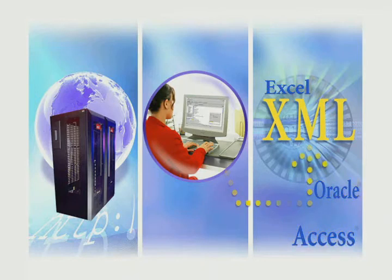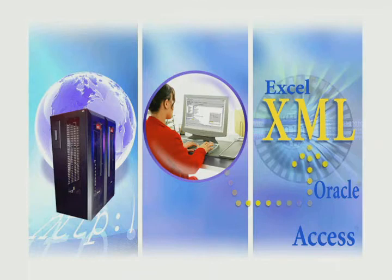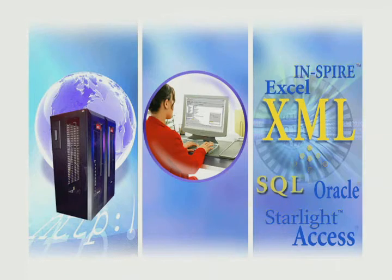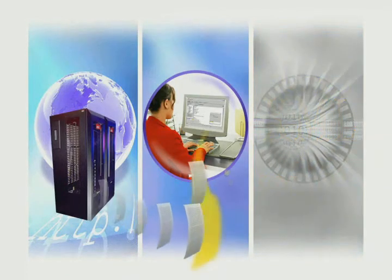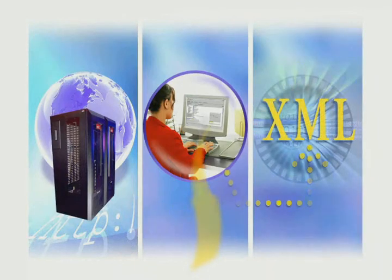UPA also provides an ideal front-end information extraction and transformation tool for analysis software. This includes Pacific Northwest National Laboratory's award-winning information visualization tools, Inspire and Starlight. For multiple users, UPA can be installed on a network server and be available to all designated users.